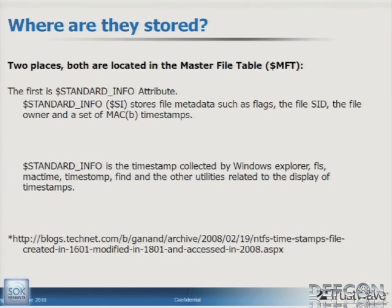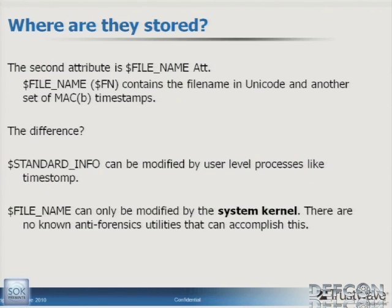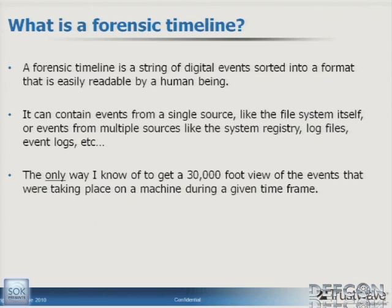That information came straight from one of the TechNet blogs, referenced at the bottom if you want to read it. The second attribute is the dollar file name attribute, or $FN. It contains the file name in Unicode and another set of MAC(B) timestamps — it doesn't contain nearly as much information as SI, but crucially it contains a second set of MAC timestamps. Standard info can be modified by user-level processes like TimeStomp, Perl scripts, or any other editor. Dollar file name can only be modified by the system kernel. There are no known utilities, anti-forensic or not, that can accomplish this.